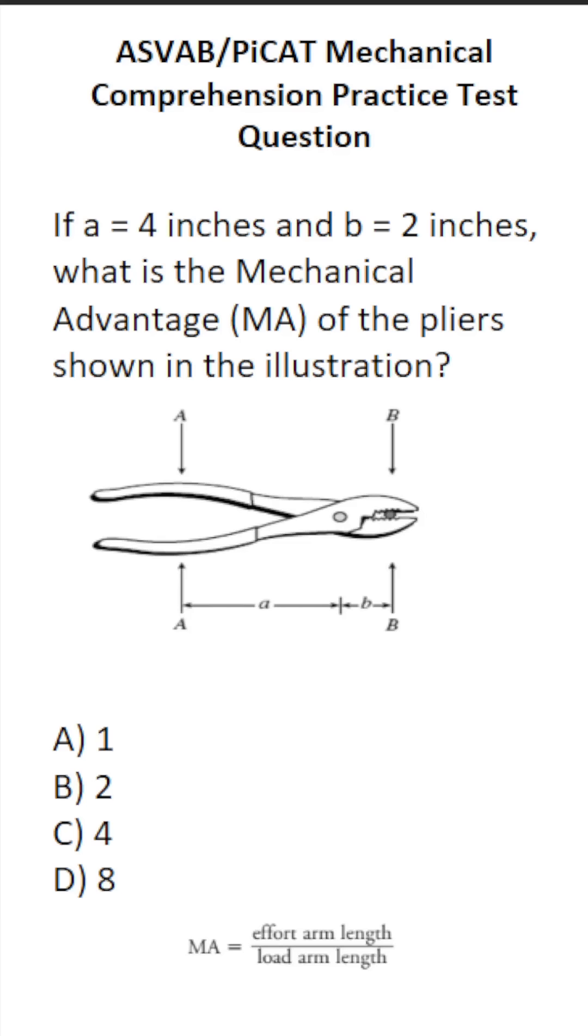This mechanical comprehension practice test question for the ASVAB and PyCat says, if A equals 4 inches and B equals 2 inches, what is the mechanical advantage of the pliers shown in the illustration? So we know A right here is 4 inches and B right here is 2 inches.